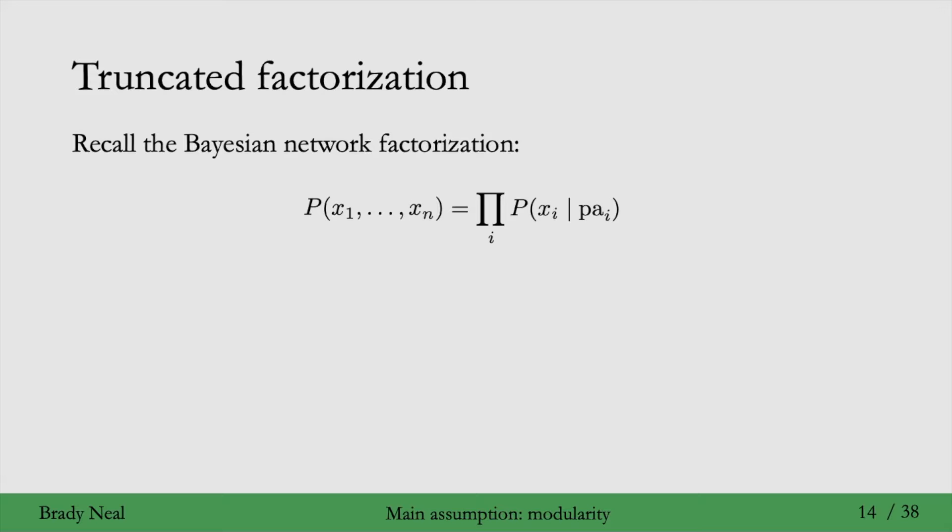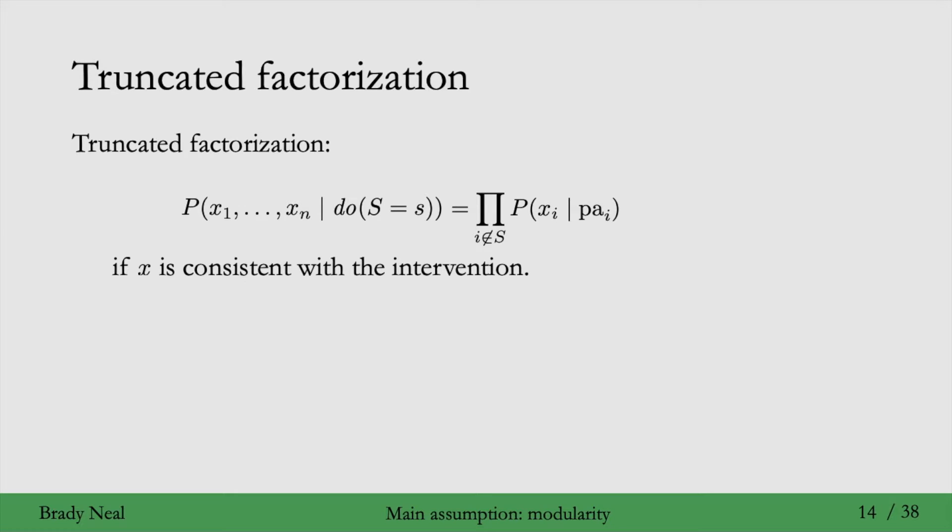Then the truncated factorization takes this joint distribution and tells us information about interventional distributions when we intervene on some set of variables s, and what it does is it changes this product over i to just a product over i that are not in the intervention set. This is if the vector x is consistent with the intervention, and otherwise this probability is zero if x is inconsistent with the intervention. So this follows directly from the modularity assumption.